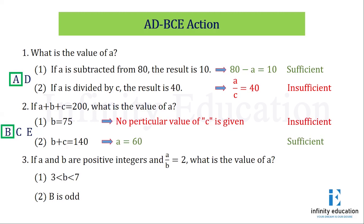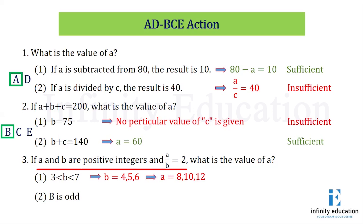Next: if A and B are positive integers and A/B equals 2, what is the value of A? For statement 1, that is 3 less than B less than 7. The key information is that A and B both have to be positive integers. There are three possible values of B: 4, 5, and 6. Based on the different values of B, we get different values of A — if B equals 4, A equals 8; if B equals 5, A equals 10; if B equals 6, A equals 12. We are getting three different values of A, hence it is insufficient.